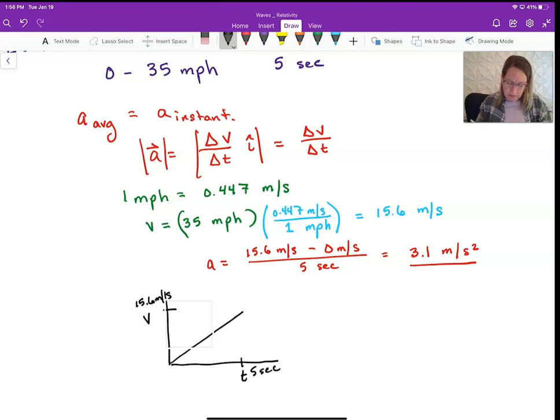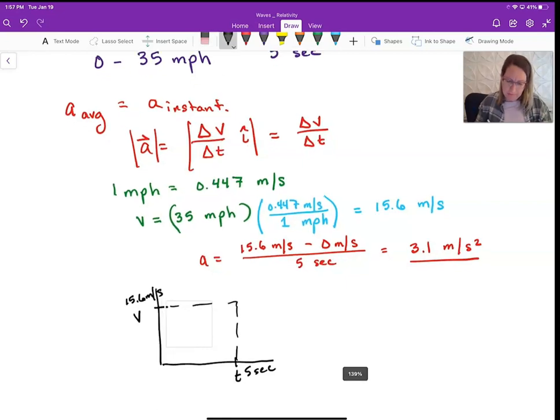If we plot that, if we assume it's linear, and we get something that looks like this. And the slope, in this case, the slope is our acceleration. Again, our rise over run, which we found before.